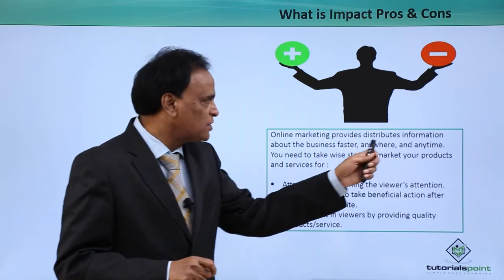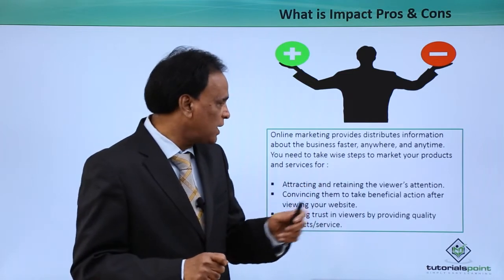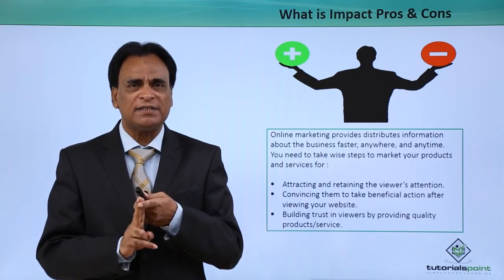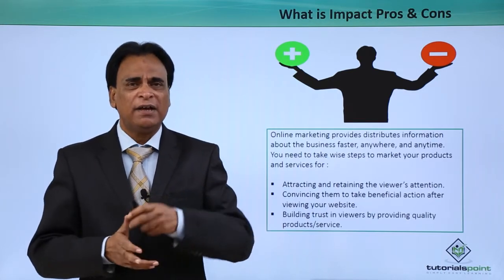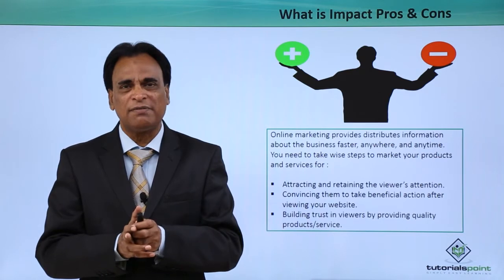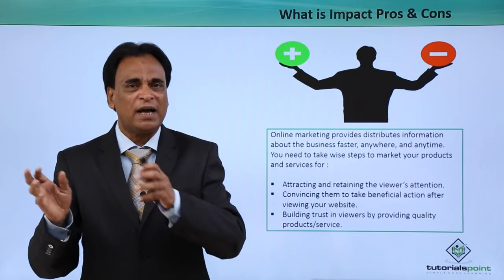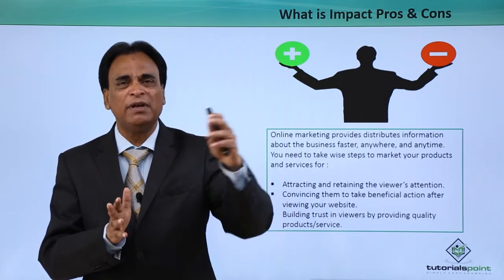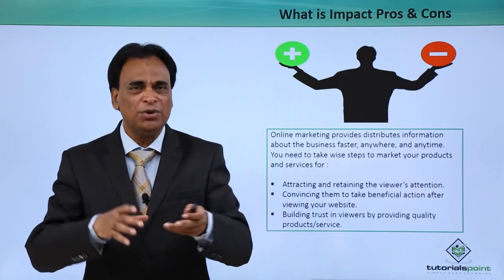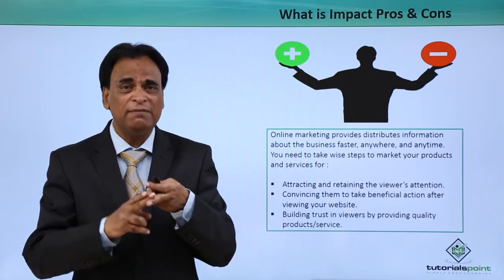Online marketing provides and distributes information about the business faster, anywhere and anytime. You need to take wise steps to market your products and services. Anytime, anywhere — that is what internet has done, that is what online marketing has done. If internet is considered disruptive, then online marketing is a paradigm shift. Digital marketing has taken the whole world of marketing to a new level — how you can tap the market, reach the market, interact, engage and communicate with people all around the world faster, anywhere and anytime.